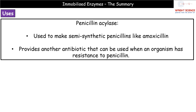The second example is penicillin acylase, the enzyme used to make semi-synthetic penicillins such as amoxicillin. Penicillin is the natural antibiotic from fungi, but these days we can make semi-synthetic versions. The key advantage is that it gives us different antibiotics, because we are seeing an increase in antibiotic resistance — particularly to penicillin, which has been in frequent use for many years — so having alternatives when resistance occurs is always a good thing.